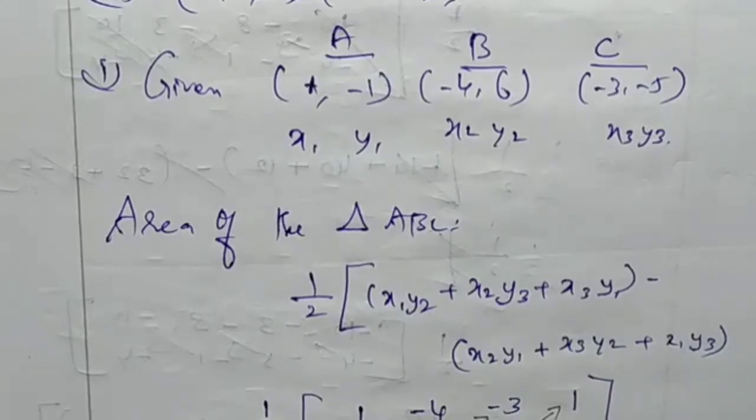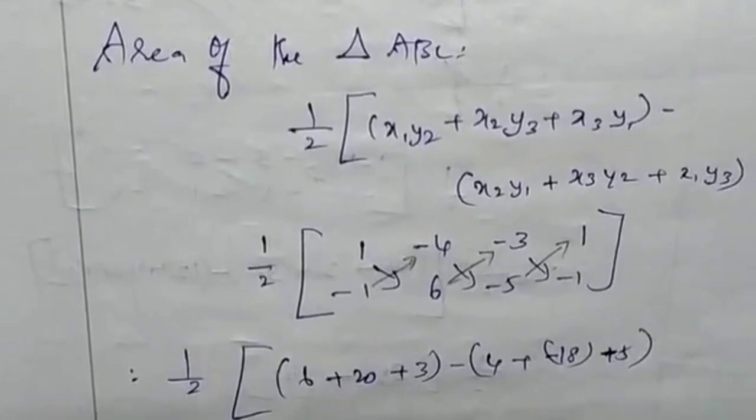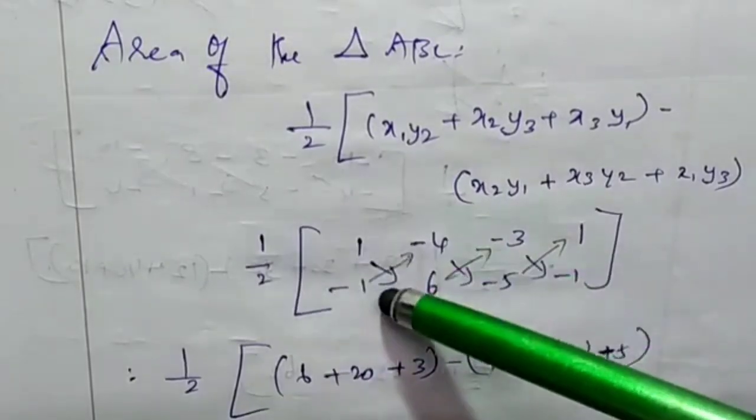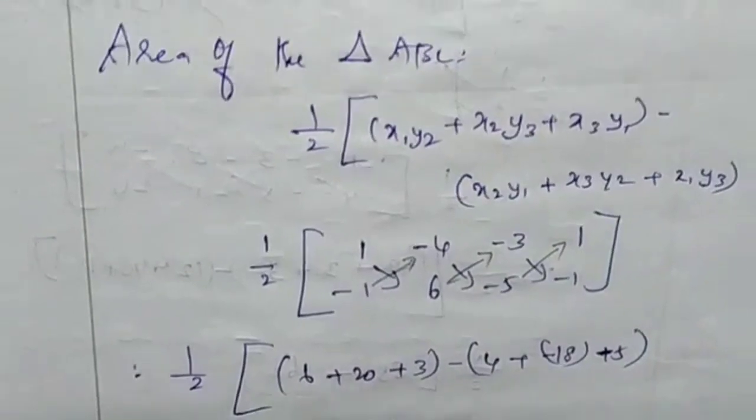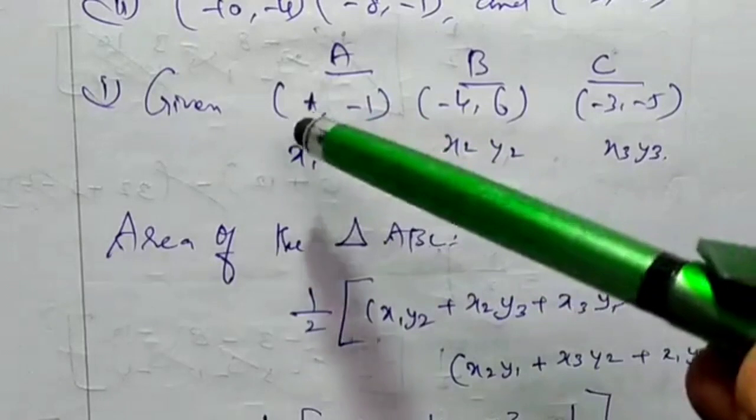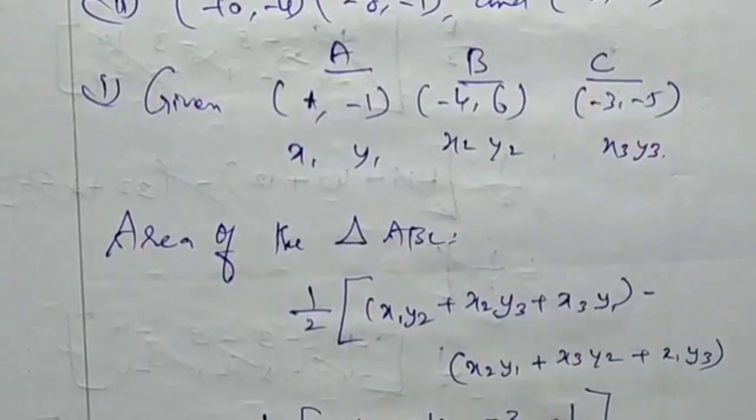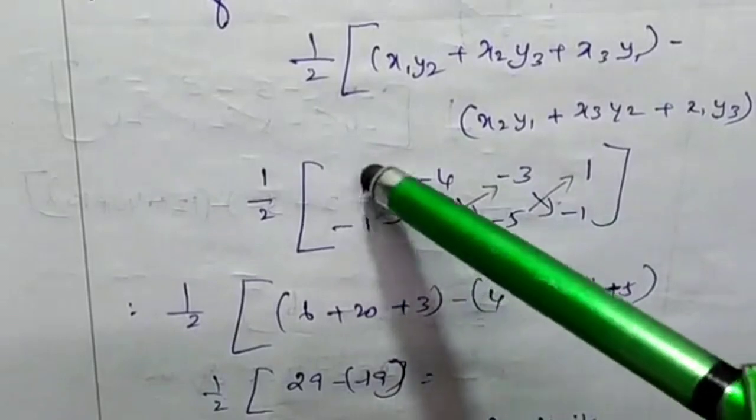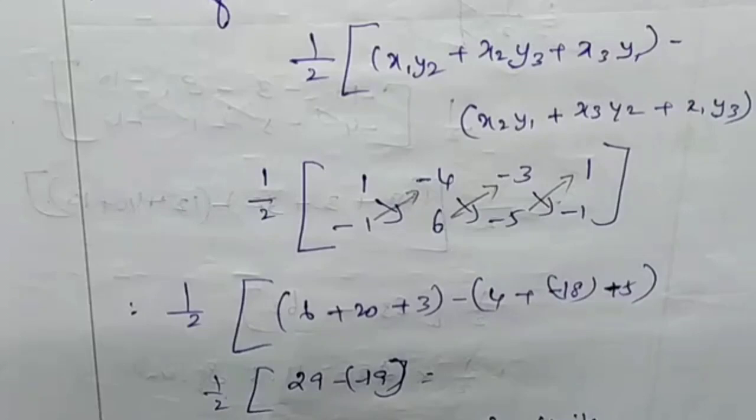Now we'll get the values. x1 equals -1, y1 equals -1, and we can find the answer. The answer is one-half.